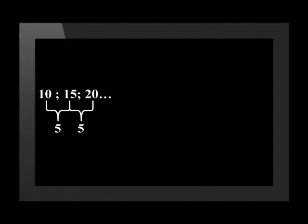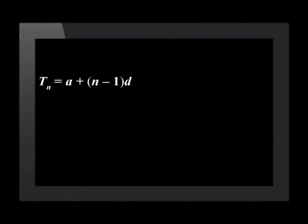First, we generate the sequence. The radii of the circles are 10, 15, and 20. The first difference between each term is 5. The first difference is constant, which means that this is a linear or arithmetic sequence. We use the formula for the general term of a linear pattern: Tn equals a plus, in brackets, n minus 1, closed brackets, times d.